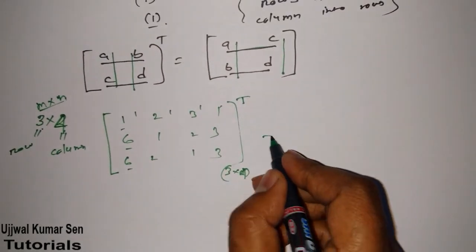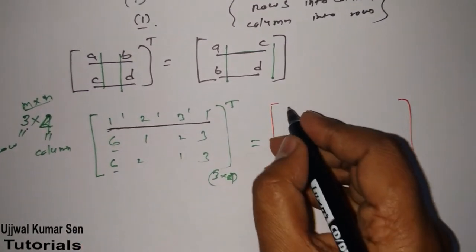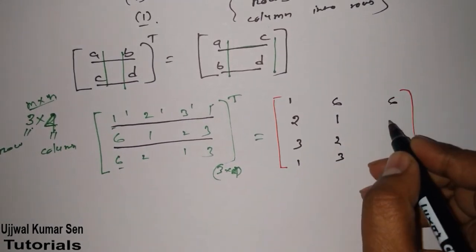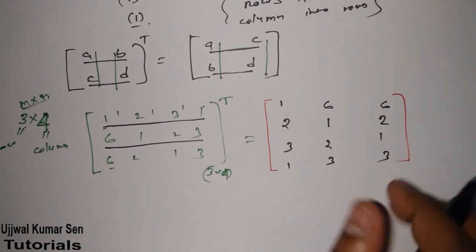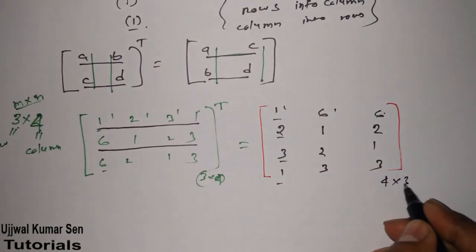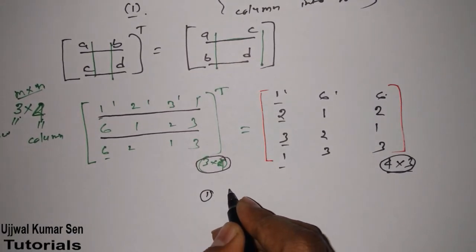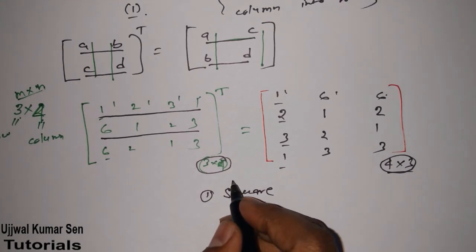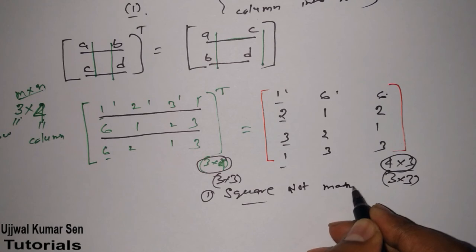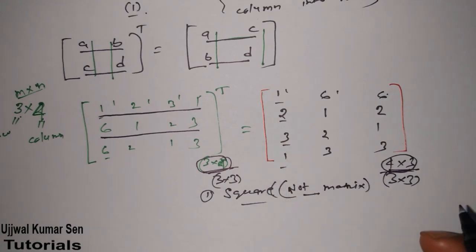If you do the transpose of this matrix, what happens? All the elements in the rows will be placed into columns. So the transposed matrix has rows 6, 1, 2, 3 and 6, 2, 1, 3. Now what is the order of this new matrix? It has 4 rows and 3 columns — the order becomes the opposite. In the case of a square matrix only, there would be no change in its order. But if it is not a square matrix, the order becomes reversed: rows become columns and columns become rows.